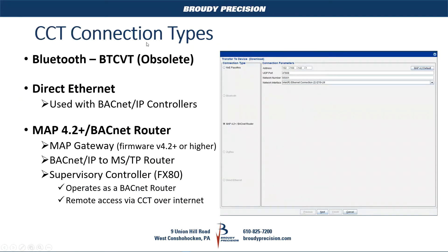To get started, I want to talk about connection types. When you're in CCT, this is the screen that comes up when you want to download, upload, or commission controllers. You'll see the types on the left. What we're going to be working with are typically the BACnet router or the MAP gateway. There's also, for those that still have the old BTCVT Bluetooth adapter, you can use the Bluetooth type. There's Zigbee if you're doing wireless, and Direct Ethernet if you're doing BACnet IP controllers. Today we're going to concentrate on BACnet router and MAP gateways.